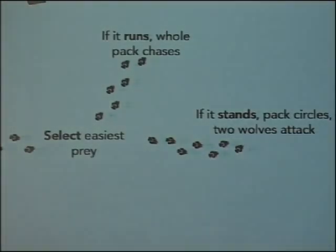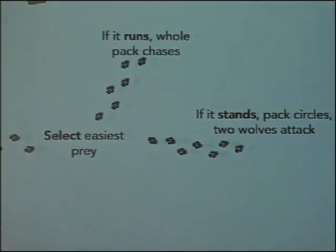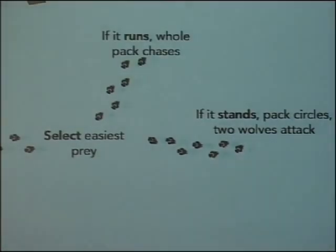Once they've selected the prey animal, the wolves work together all targeting the same one. The prey basically does one of two things: it runs or it stands its ground. If the animal runs, the whole pack will chase — sometimes for hours, even over a day. If it stands, the wolves circle it to contain it, and two wolves at a time will worry the prey while the others rest, wearing the animal down.